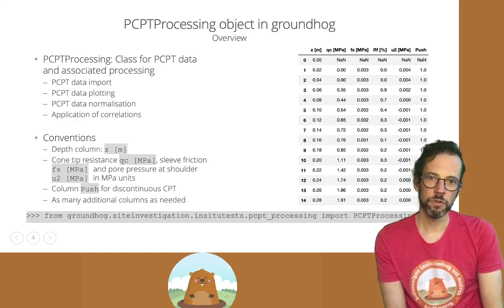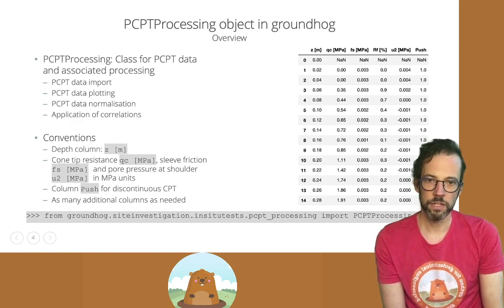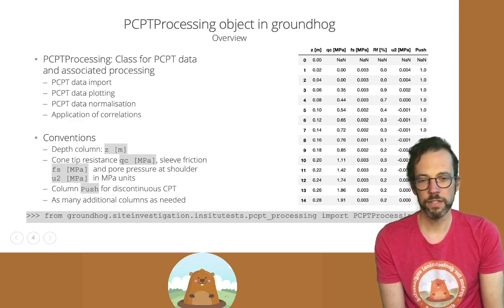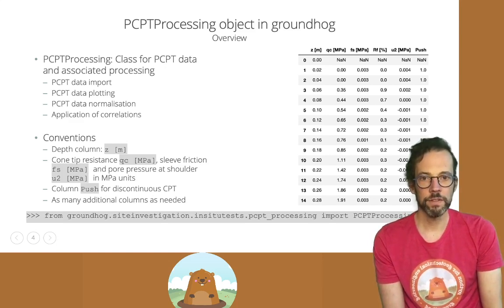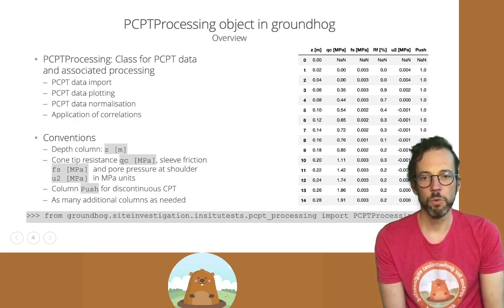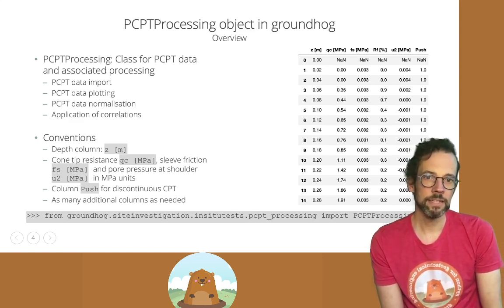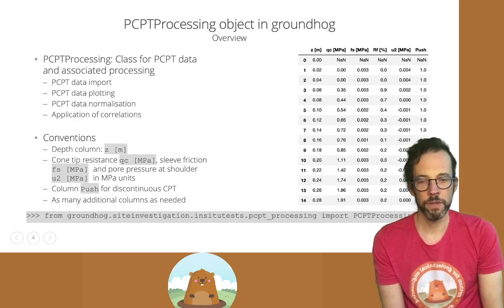There are a couple of conventions for this class. The data attribute requires the depth column to have the title Z [meters]. The columns for cone tip resistance, sleeve friction and pore pressure at the shoulder — QC, Fs and U2 — need to have the names defined in the slide and also need to have units of MPa. We'll cover how to get non-MPa units into MPa units later on. There's also a provision for working with discontinuous CPT data by adding a push number to a given CPT push.